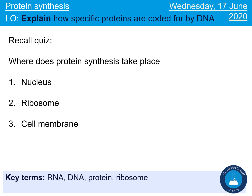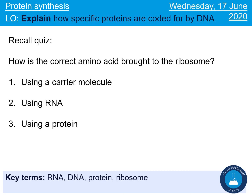Next question — pause the video and choose your answer. We should have said the ribosome. Be careful that you don't say the nucleus. Although the DNA is stored in the nucleus, once it's turned into RNA it actually moves out of the nucleus, and it's on the ribosomes where the actual protein synthesis takes place. Next question — pause the video and restart when you've got your answer. We should have said a carrier molecule. The RNA is being read by the ribosome and we're making a protein, so it is the carrier molecule that goes and collects the correct amino acid.